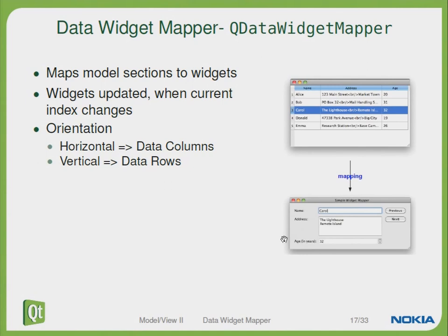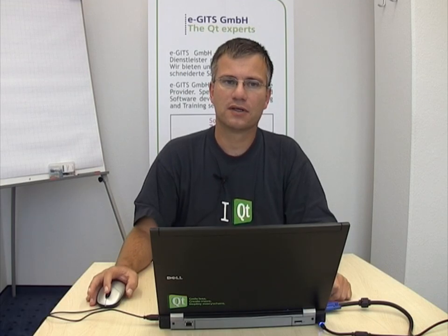You can specify the orientation of your data, whether it's horizontal or vertical. To set up the mapping, we simply have to tell which item has to be mapped to which widget. First we create a new instance of our data widget mapper, set the correct orientation, set the underlying model, and then we add the mapping.